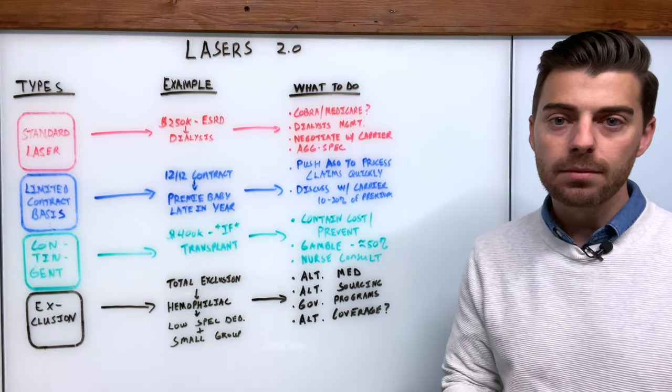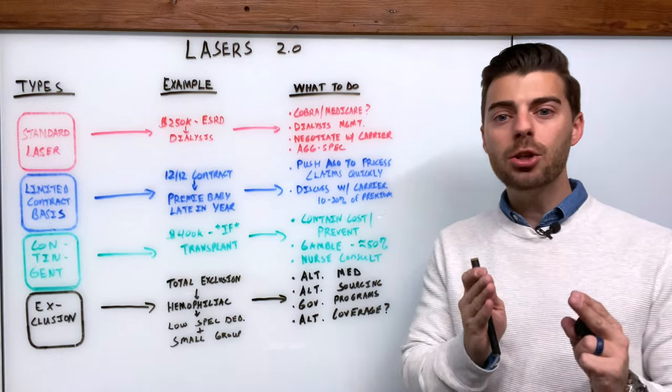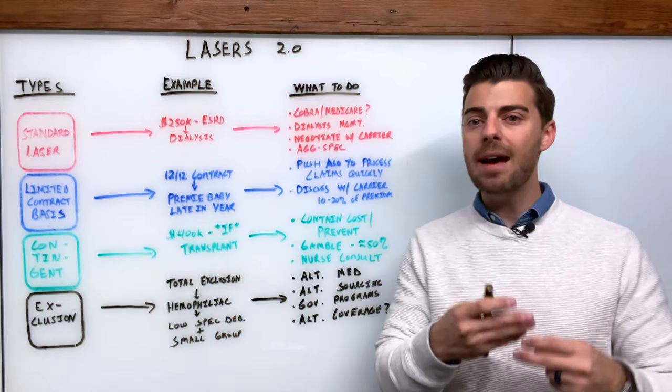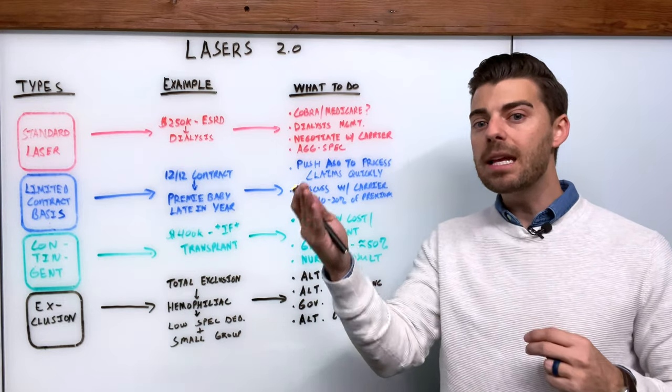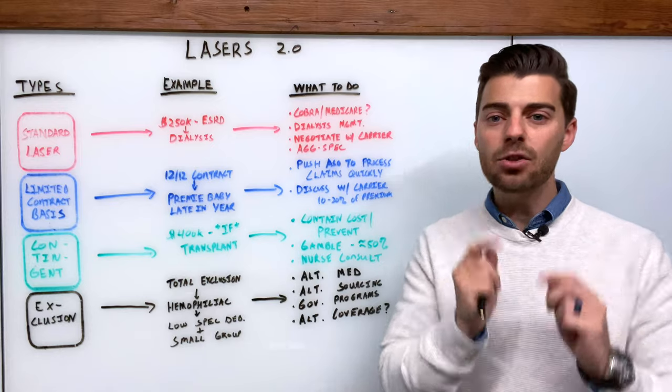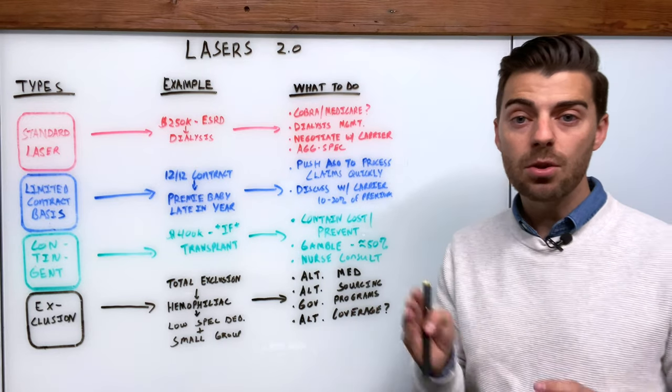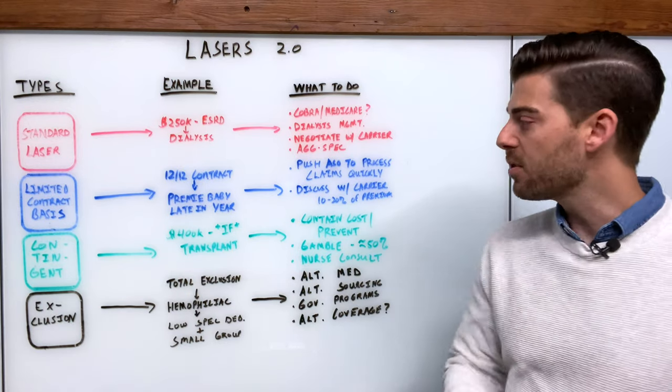The next type of laser is a limited contract basis. What that means is you might have a twenty-four twelve or a thirty-six twelve that's being quoted for everybody else, but the carrier might say, you know what, for this particular person I'm adding a twelve twelve limitation. So we are not covering any of the run-in claims that might happen.